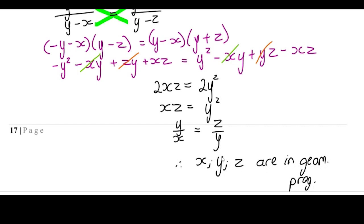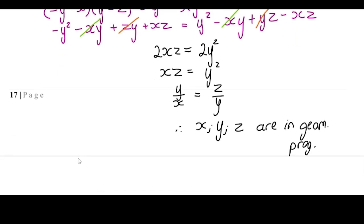Since y² = xz, we can divide both sides by xy to get y/x = z/y. This means x, y, z are in geometric progression. That's a really tricky question — not necessarily expected to be done independently, but interesting to see how all our algebra comes together. That brings us to the end of this lesson.